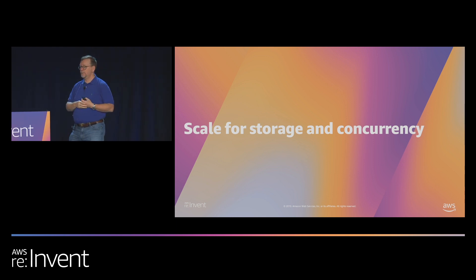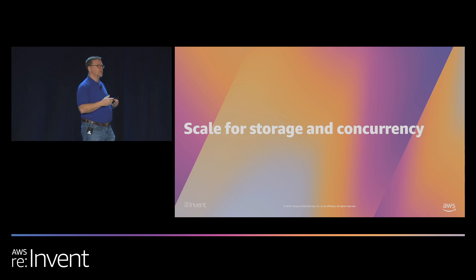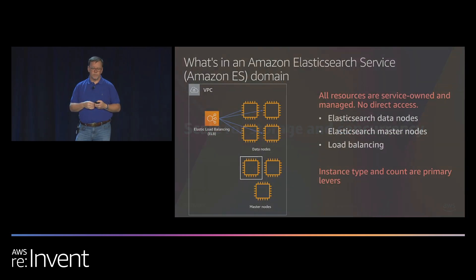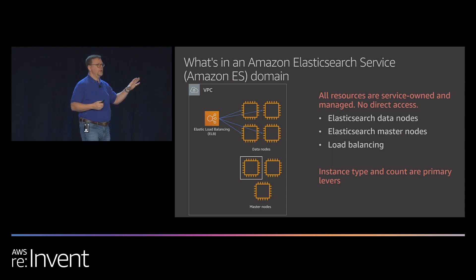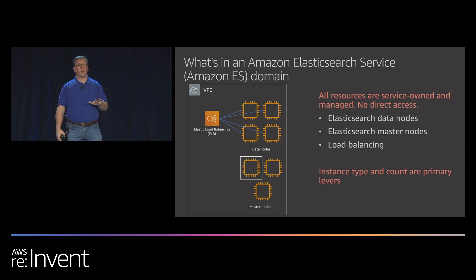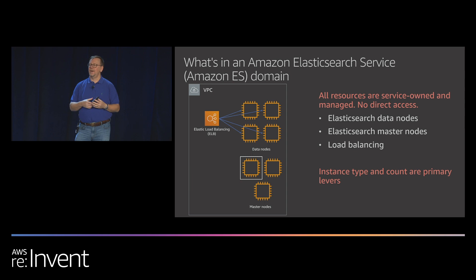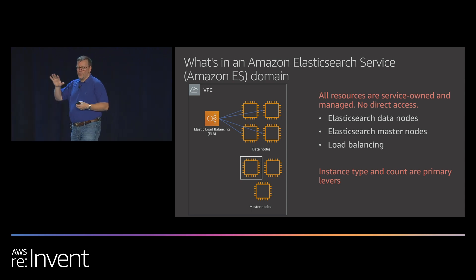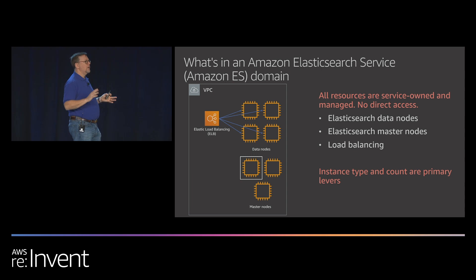Now let's talk about how to scale your Elasticsearch service domain for your particular ingest workload. When doing sizing and capacity planning, think about storage and compute. For storage it's fairly straightforward: look at how much log data you're flowing in and calculate how much storage you need. That gives you a baseline — a minimum set of instances to deploy. Then it gets trickier, because Elasticsearch resource usage is highly dependent on the data itself, the schema, and the actual work being done during ingest.